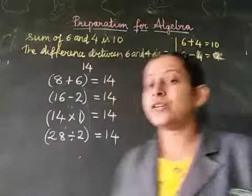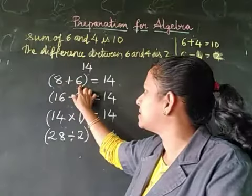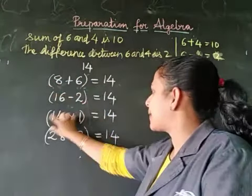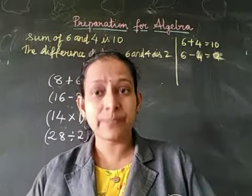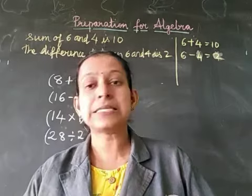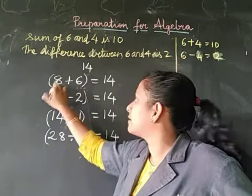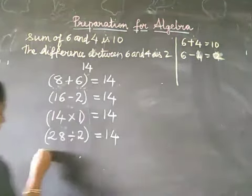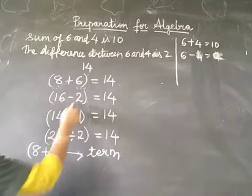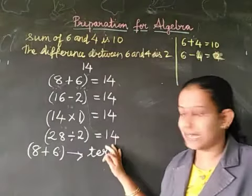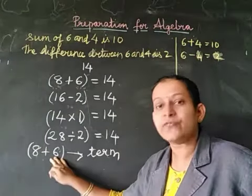All the answers are the same — that is 14. If you see carefully, I have written these pairs of numbers in brackets. Whenever any pairs of numbers are written in the bracket, we call them as terms. So we can say that 8 plus 6 is nothing but a term.